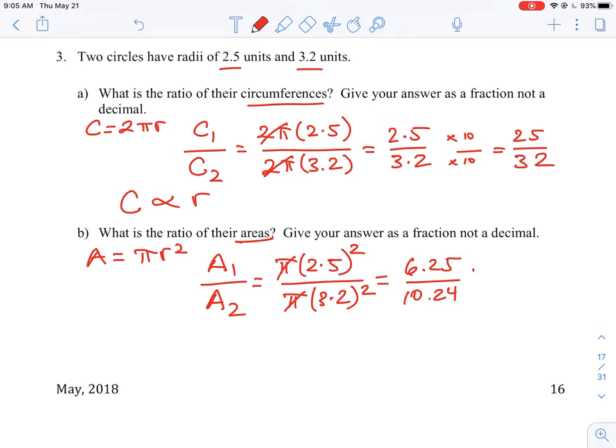So instead, what we can do is multiply top and bottom by 100 because that will remove our decimals. So we will have 625 over 1024.